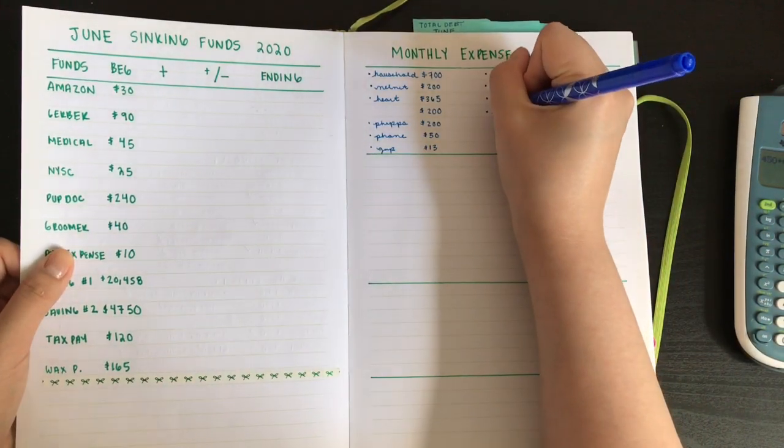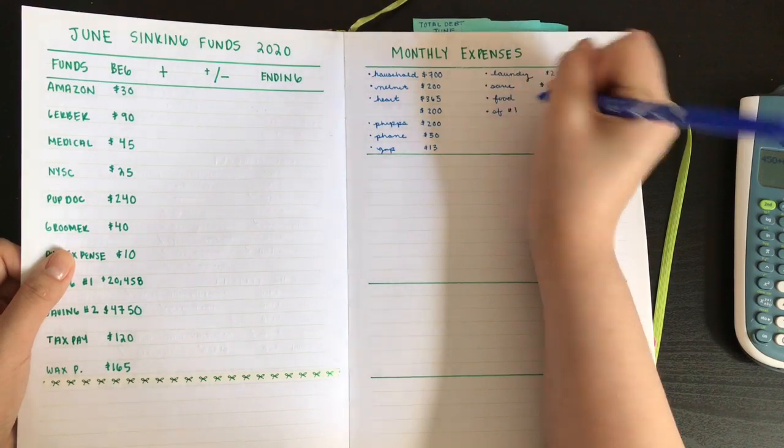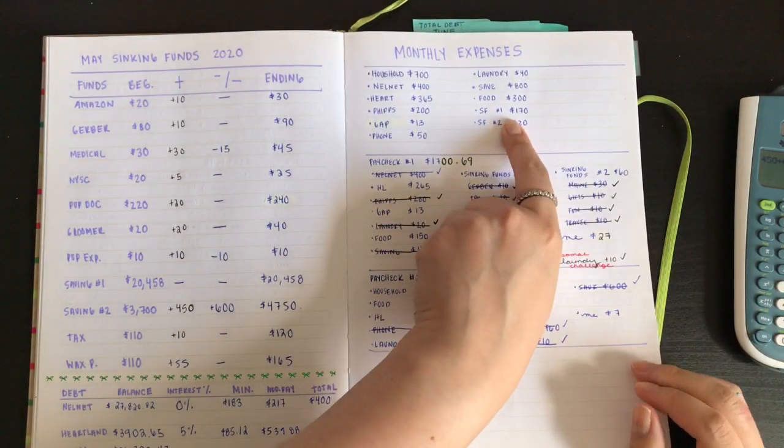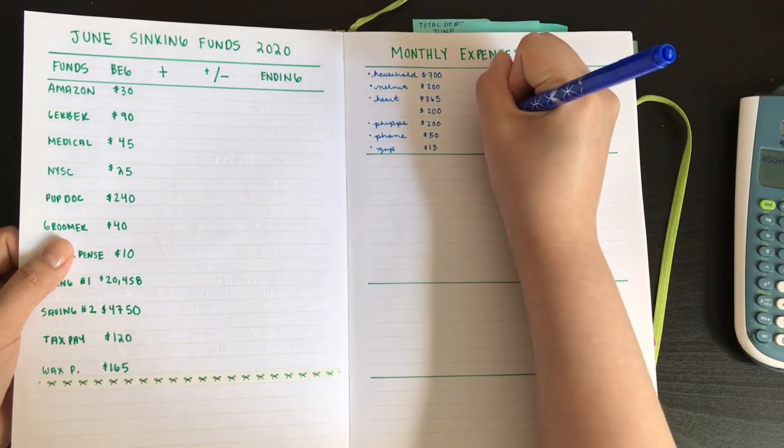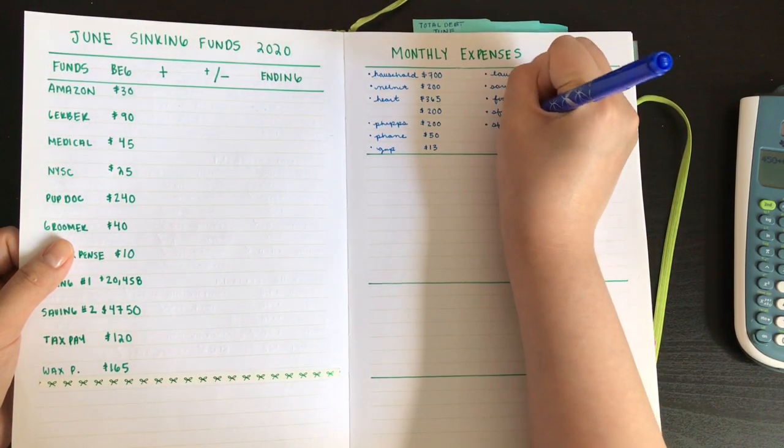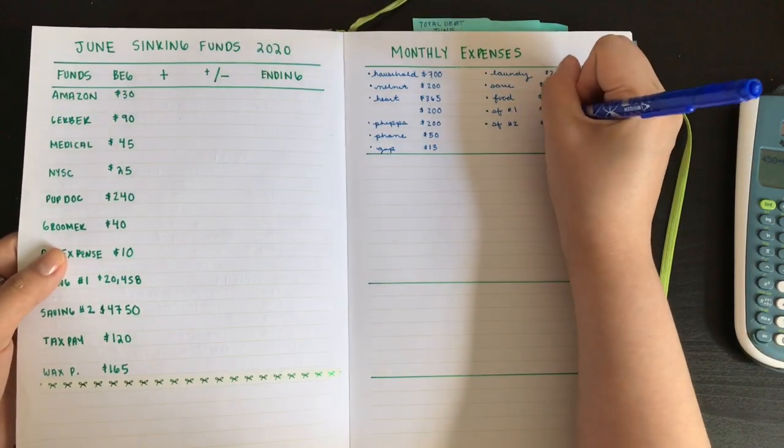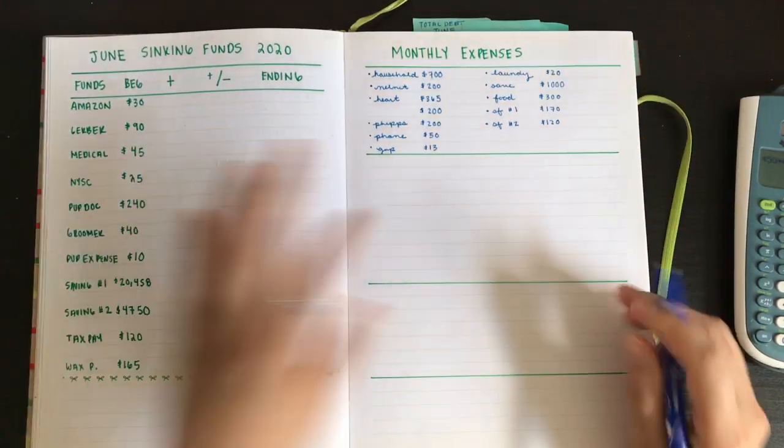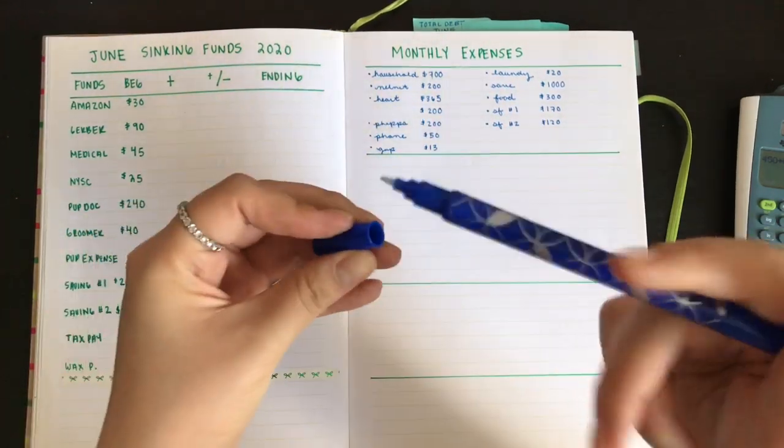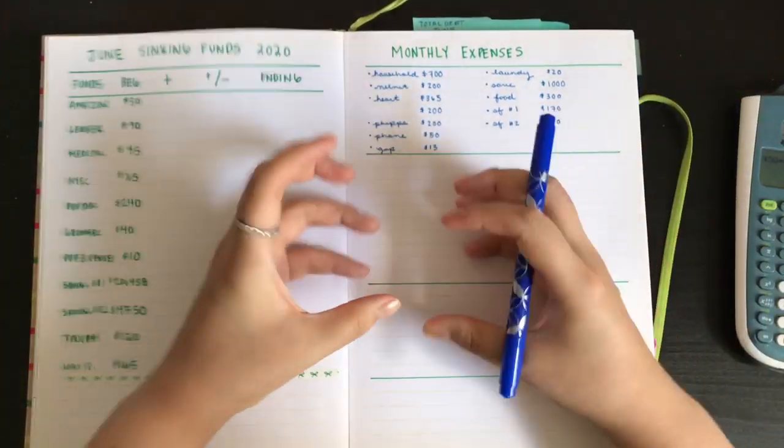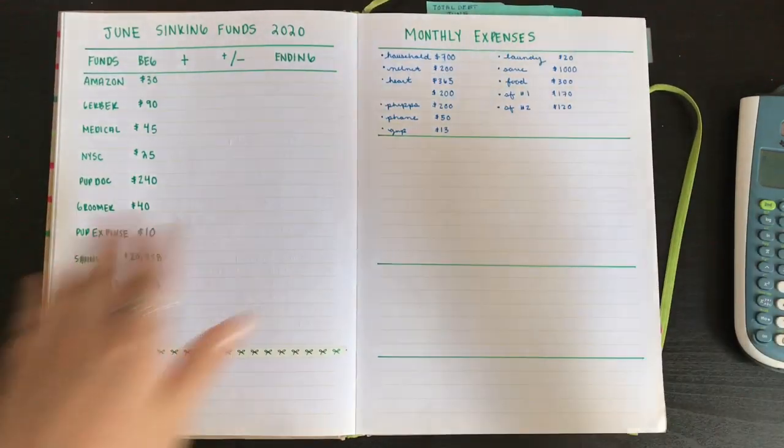Sinking funds, and then I split the expenses between both of my paychecks. Sinking funds number one gets $170. And then sinking funds number two gets $120. Hopefully, with time, this can increase, because I do want to start really putting in a good chunk of money in my sinking funds.